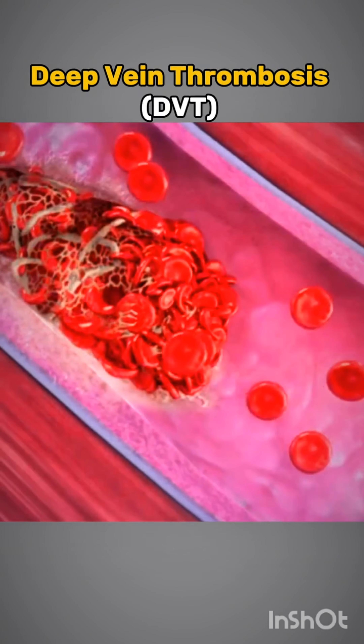A pulmonary embolism (PE) happens when the traveling blood clots (emboli) become lodged in the blood vessels of your lung. Since this can be a life-threatening condition, you need a quick diagnosis and treatment.